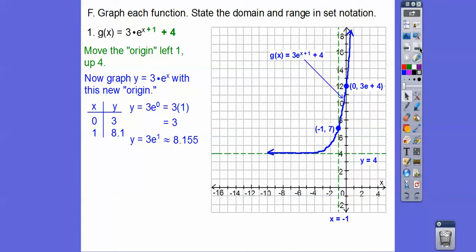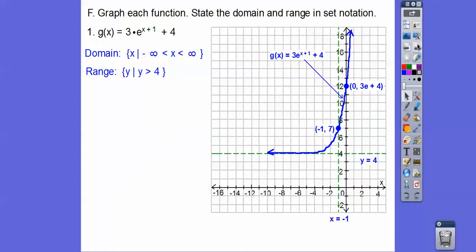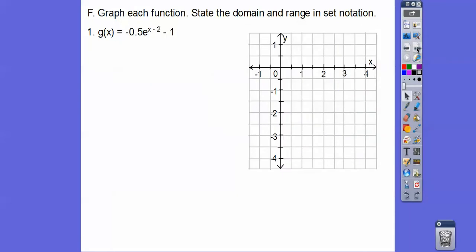There's our graph, and then our state, our domain and range. It goes left and right forever. However, it's everything above 4, so our range would be y is greater than 4. If it said, what's our end behavior? As we go to the left, as x goes to negative infinity, this graph is going y would go to 4. As x goes to positive infinity, it goes to positive infinity.